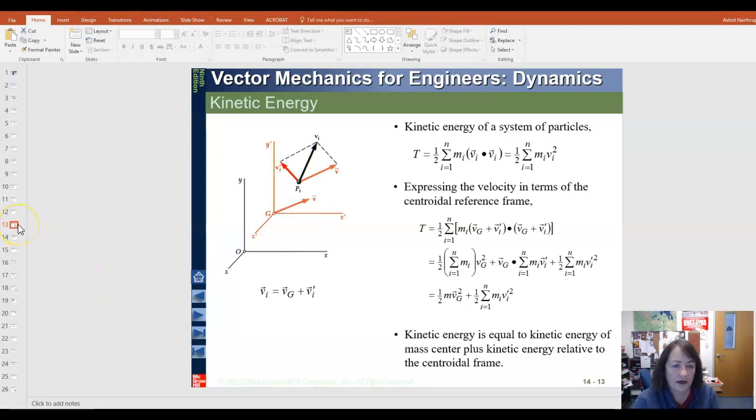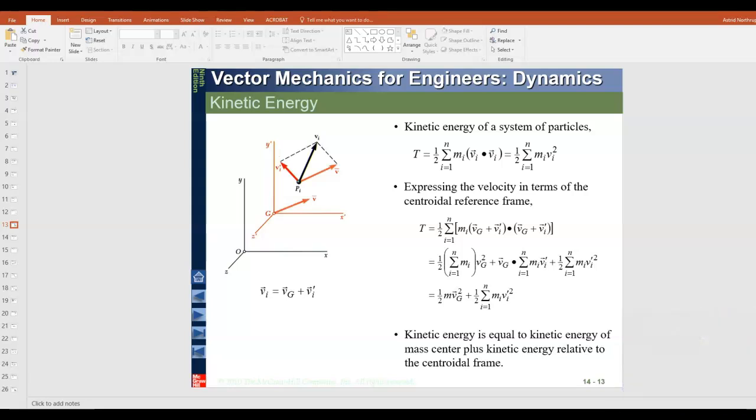So getting started, first of all, everything that we talk about here in section 14.2 is very much related to the material in 14.1. Basically, if you have a system of discrete particles, the energy momentum in both the linear and the angular form can be viewed as a sum of the quantities of that particle. This first slide talks about the kinetic energy of the system of particles, and it basically says that if you have a relative reference frame, if you know where the center of gravity is and you have a center of reference that is relative to that center of gravity of the overall system, that the kinetic energy of the system is equal to the kinetic energy of that center of mass or center of gravity plus the sum of the kinetic energies with respect to that center of gravity.